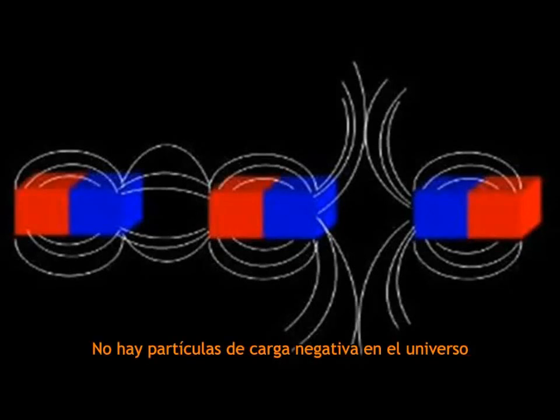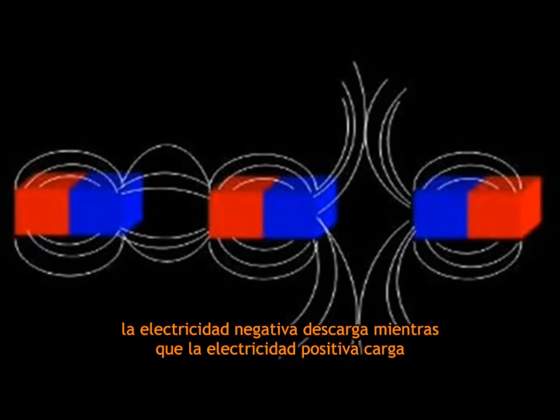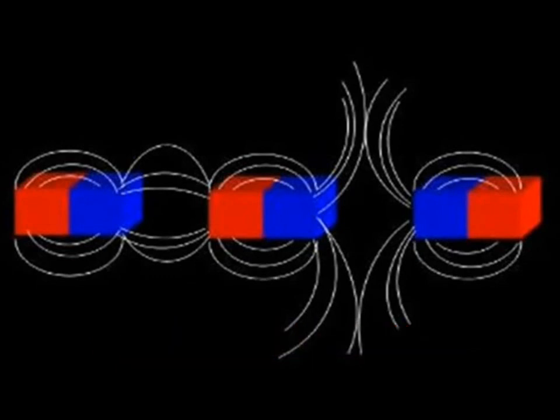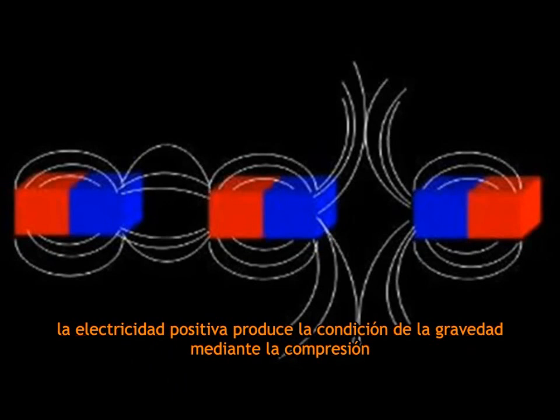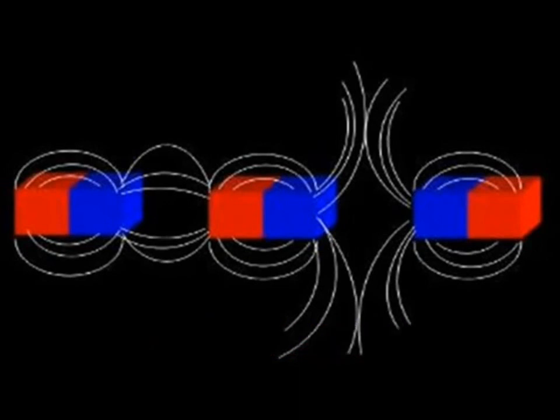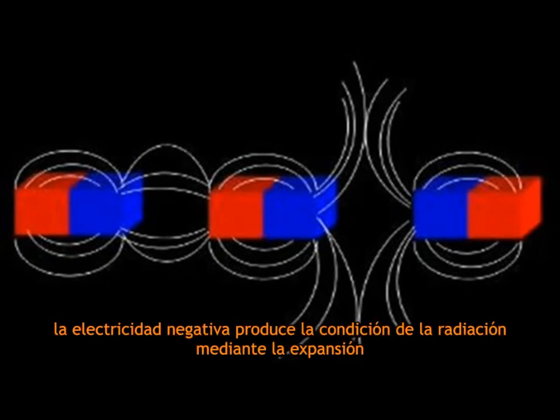There are no negatively charged particles in the universe. Negative electricity discharges while positive electricity charges. Positive electricity produces the condition of gravity by compressing. Negative electricity produces the condition of radiation by expanding.